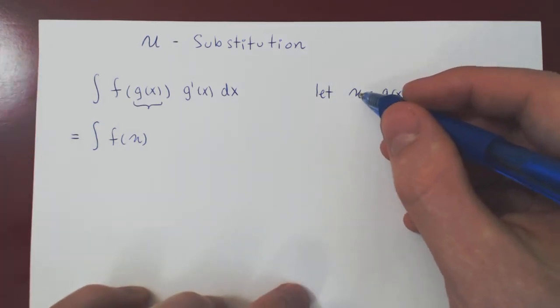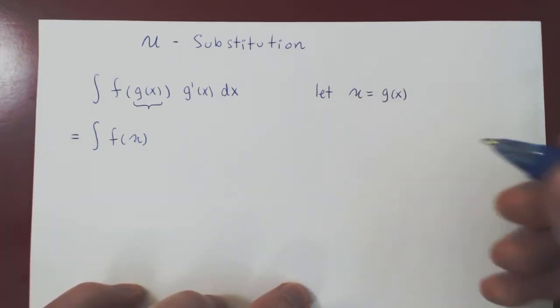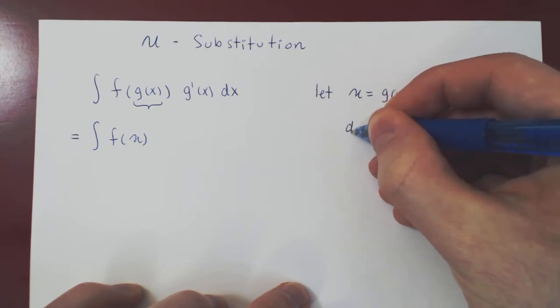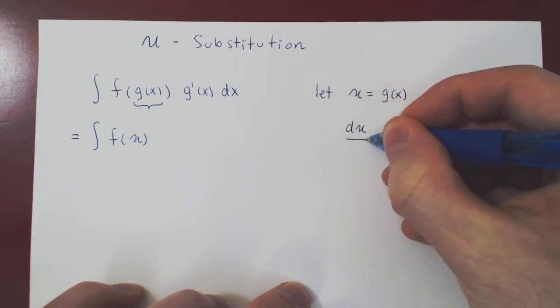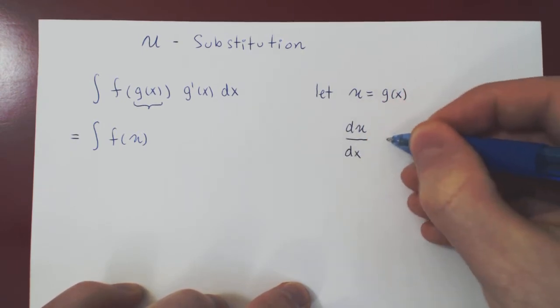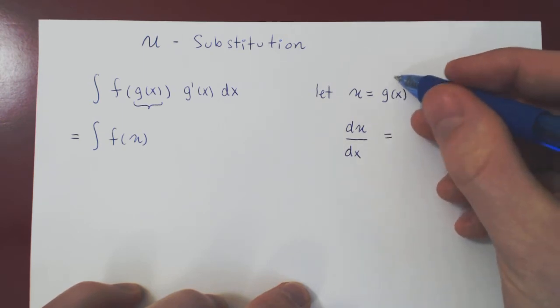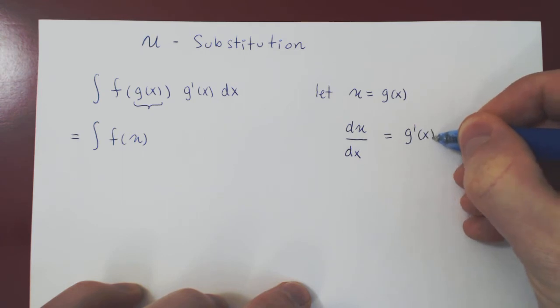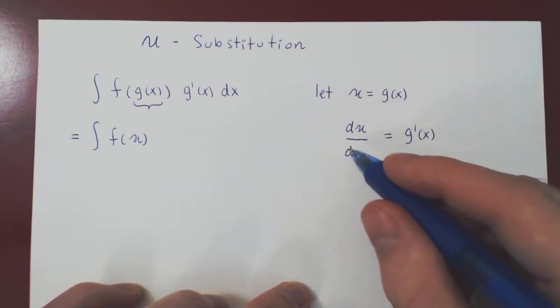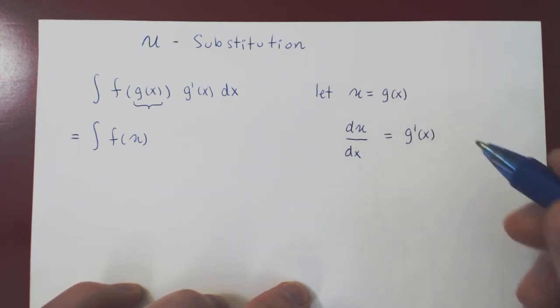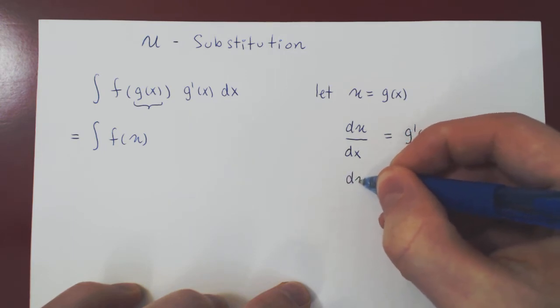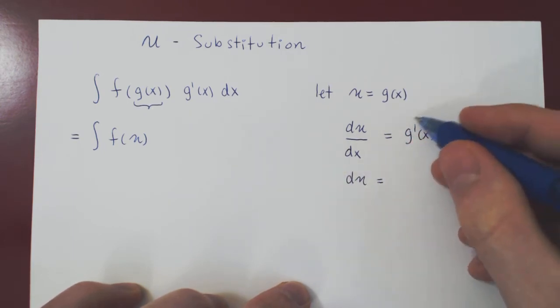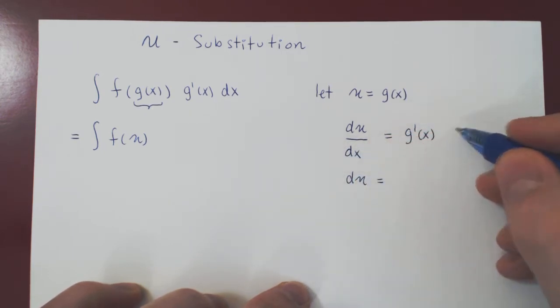Well, think about it. u is a function of x, so we can find its derivative. So we can differentiate u with respect to x, so du over dx. This will equal g prime of x. We are finding the derivative of our function with respect to x. So we can multiply across by dx. And now you're going to have that du is g prime of x times dx.